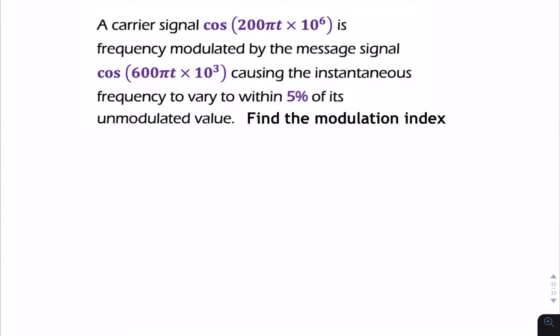In this question, we're given a carrier signal and a message signal. We're told that it's frequency modulated, and we're told that the frequency varies to within 5% of the unmodulated value. And the question is, find the modulation index. So we're trying to find beta.